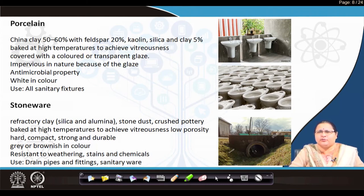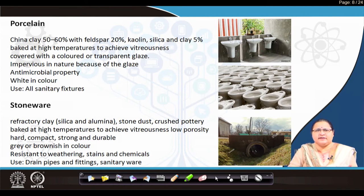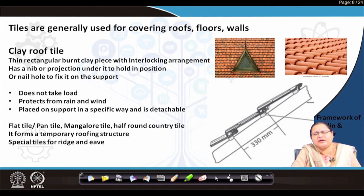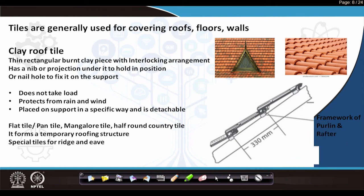Some sanitary wares are also made with stoneware. Another item not covered in the slide is earthenware — these are not as stable as stoneware but find some use in piping, though not much in the building industry. After covering all these items, we come to the last one under clay: clay tile, and particularly clay roofing tile. We also have flooring tiles and wall tiles made of clay, but those will be covered when we are into glass and ceramics.